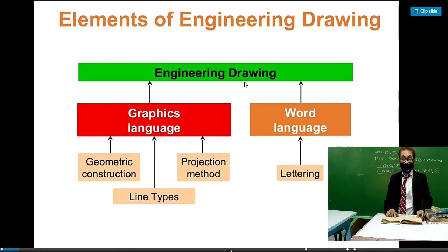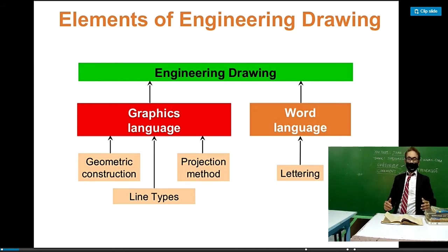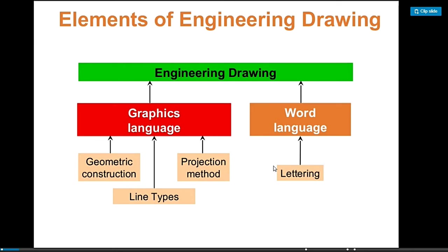In engineering drawing, there are two elements: graphics and word language. In word language, we use letters, so we will study lettering. We will make three kinds of lettering plates to better understand the word language of engineering. Lettering tells the specifications - what is the size, diameter, length, and area. These are described with letters composed of words. Graphic language is the appearance, how to draw the projection, geometric construction, and what line types to use.